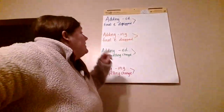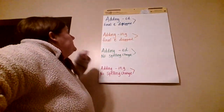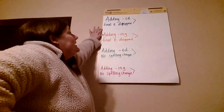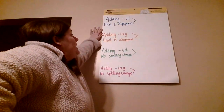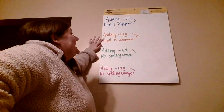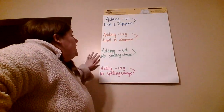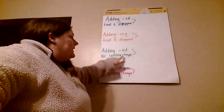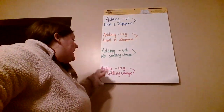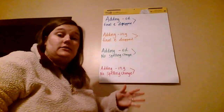On that paper you have four categories: adding ED with final E dropped, adding ING with final E dropped, adding ED with no spelling change, and adding ING with no spelling change.